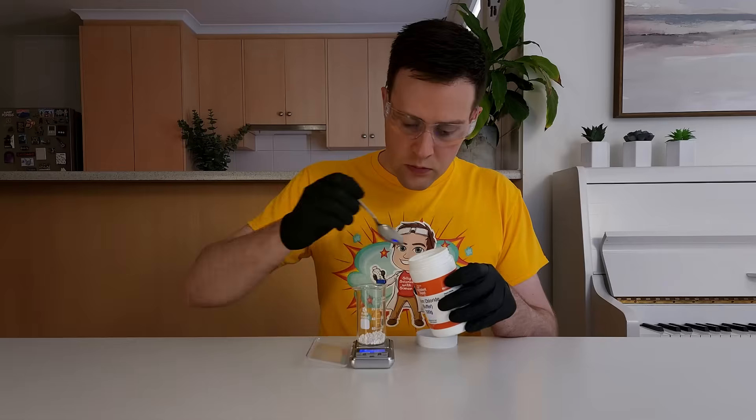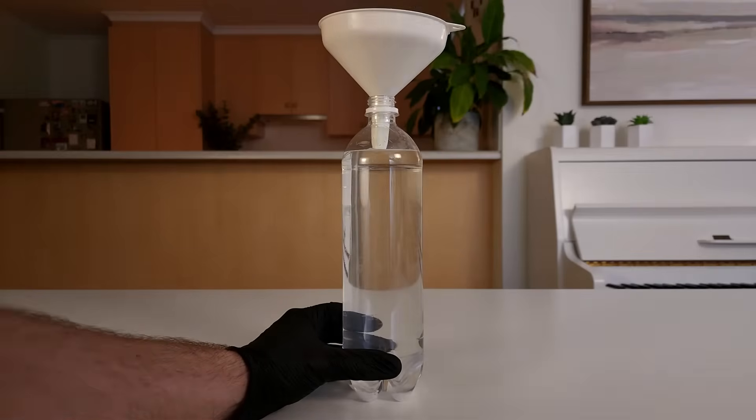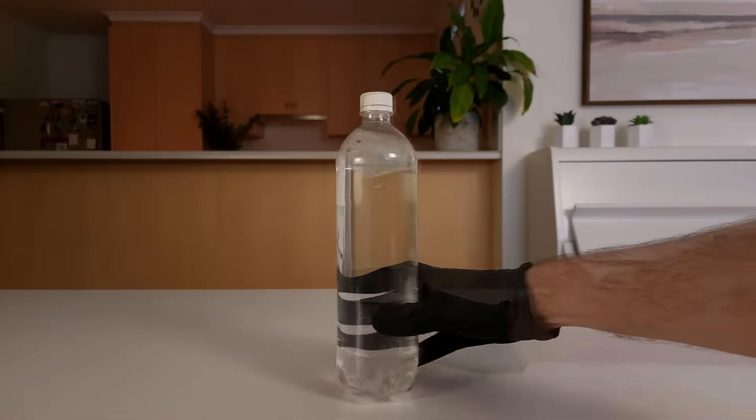Next, ask an adult to carefully weigh out 10 grams of calcium chloride. This is about 2.5 teaspoons. Then place the calcium chloride in another bottle and add 1 liter of water. It should dissolve after just a few minutes of swirling.